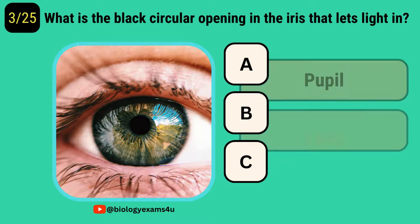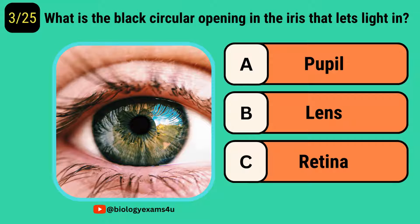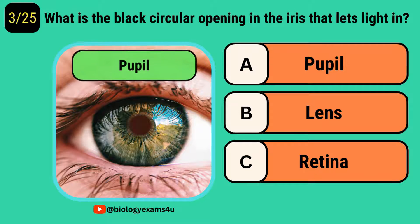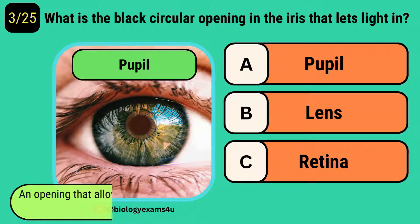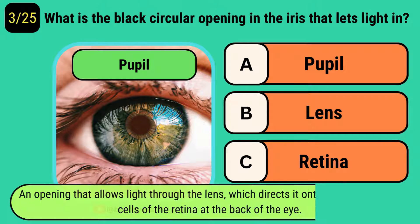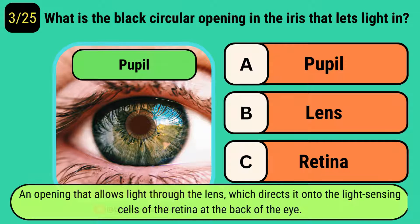What is the black circular opening in the iris that lets light in? The answer is pupil. The pupil is an opening that allows light through the lens, which directs it onto the light-sensing cells on the retina at the back of the eye.